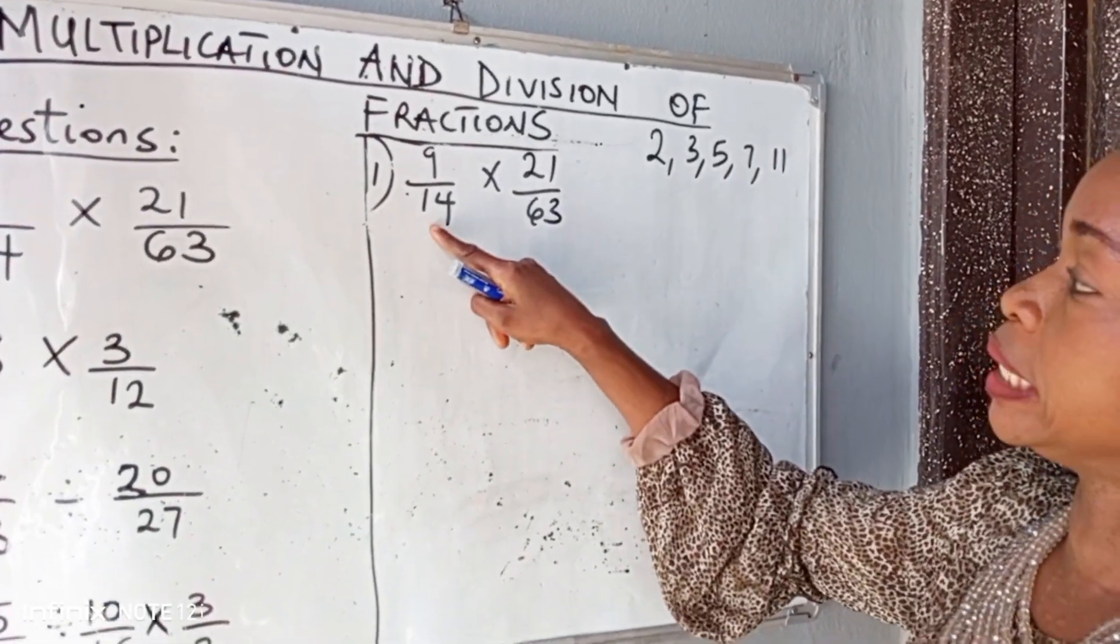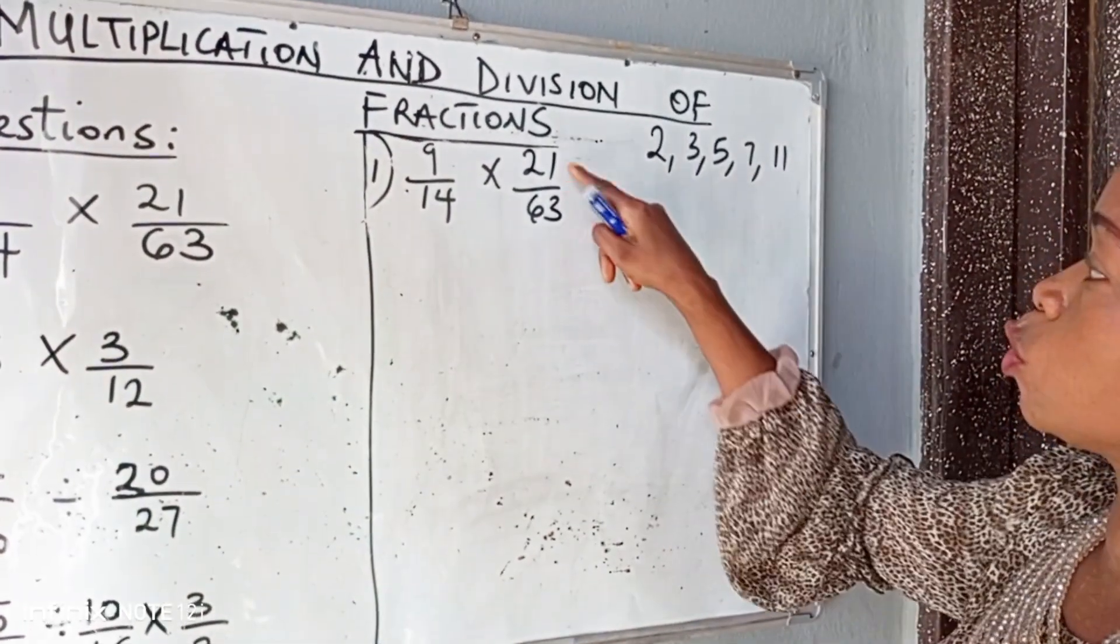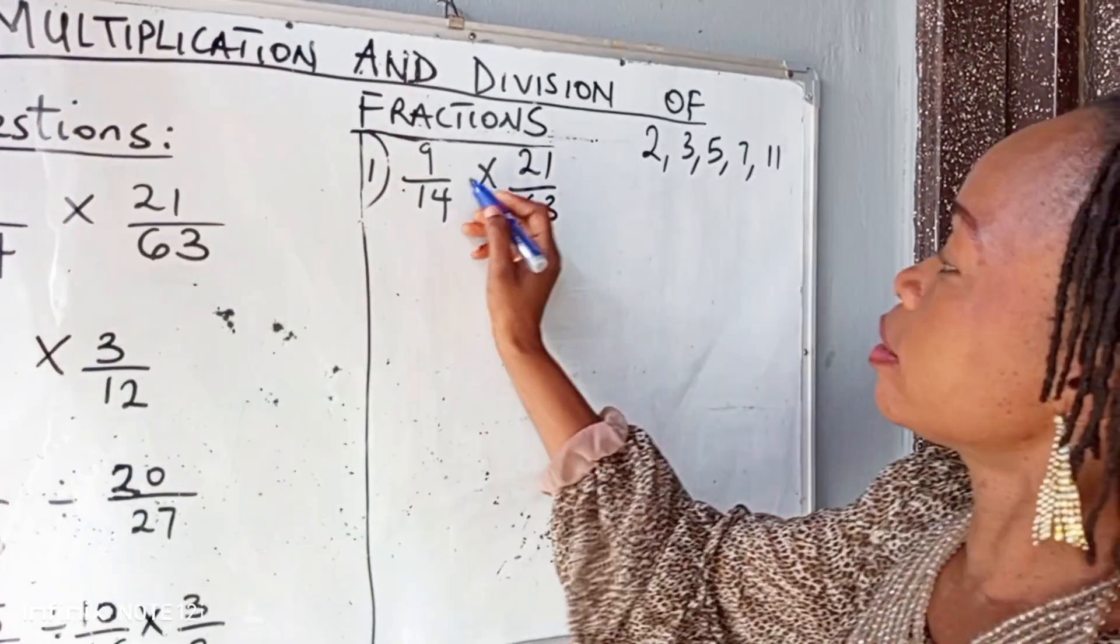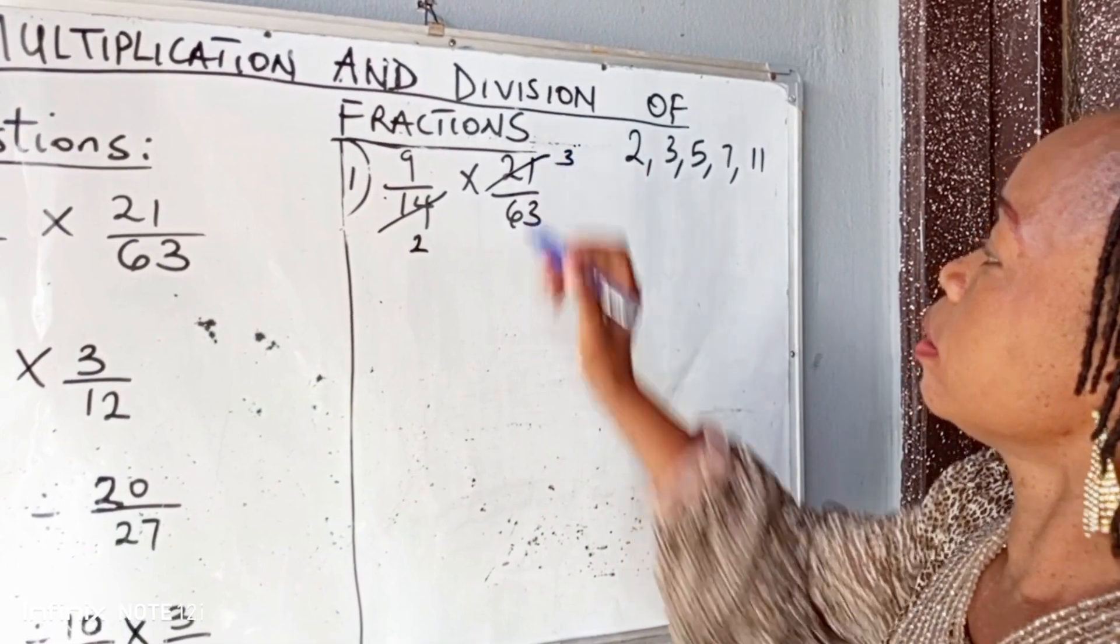So let's check 7. Can 7 go into 14? Yes. Can 7 go into 21? Yes, so we'll use 7. 7 here, 2. 7 here, 3.